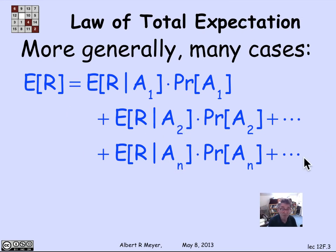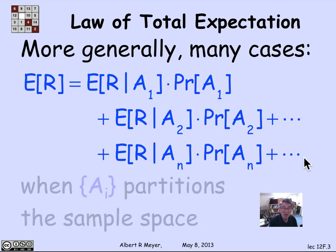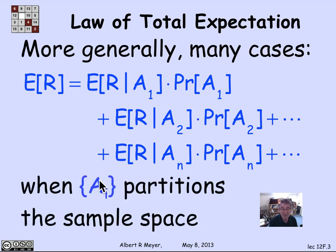This could very well — and typically is — an infinite sum, where the ai's are a partition of the sample space. So they're all the different cases — either a1 or a2 or a3 — they're disjoint, and altogether they cover the entire set of possibilities.